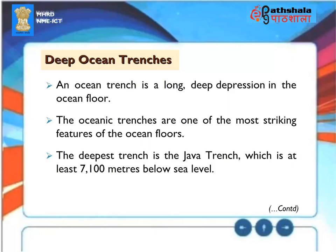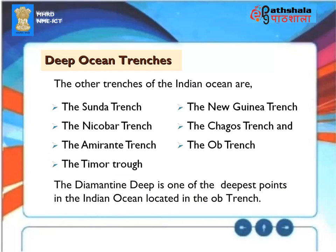Deep Ocean Trenches. An ocean trench is a long, deep depression in the ocean floor. Oceanic trenches are among the most striking features of ocean floors. The deepest trench is the Java Trench, at least 7,100 meters below sea level. Other trenches of the Indian Ocean include the Sunda Trench, the Nicobar Trench, the Amirante Trench, the Timor Trough, the New Guinea Trench, Chagos Trench, and the Ob Trench. The Diamantina Deep is one of the deepest points in the Indian Ocean, located in the Ob Trench.